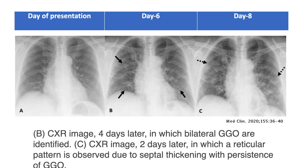The X-ray shows progression of disease on the day of presentation, day 6, and day 8. In image B, ground glass opacities are mildly developed — however, they are much more clearly visible on CT scan. On day 8 we see septal thickening with persistence of ground glass opacities.